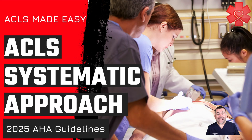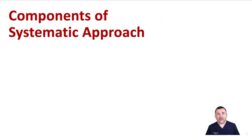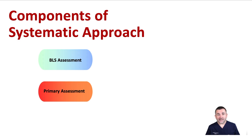I will include a link to all the AHA algorithms in the description below. Healthcare professionals should use a systematic approach to ensure nothing is missed during a patient assessment. The American Heart Association systematic approach includes three components once you have established scene safety and your initial impression of the patient: the BLS assessment, the primary assessment, and lastly the secondary assessment.